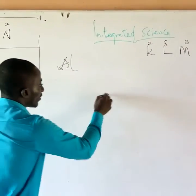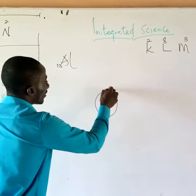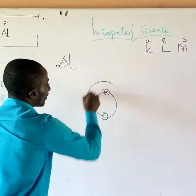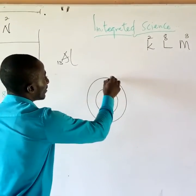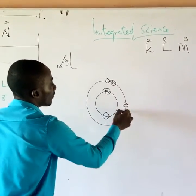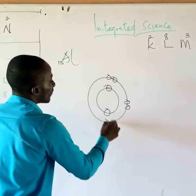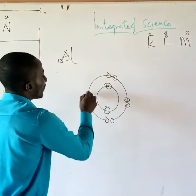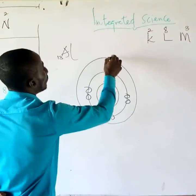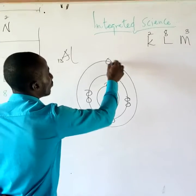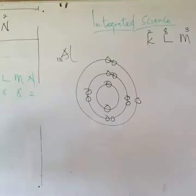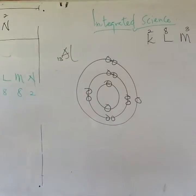So let's draw it. We have the K shell: 1, 2. Next shell, L: 1, 2, 3, 4, 5, 6, 7, 8. And the last shell, M, will be 1, 2, 3. That is aluminum.